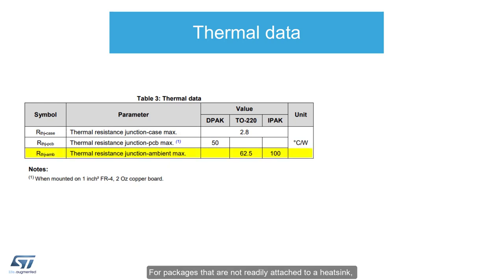For packages that are not readily attached to a heatsink, or with low thermal resistance to a solderable pad, such as an SO8 or TO92, you will usually only find the junction to ambient resistance specified, as the case is not thermally controlled by a mass like a heatsink or PCB.